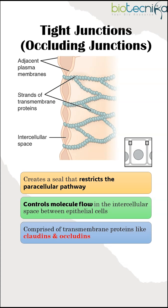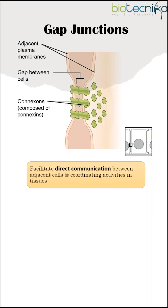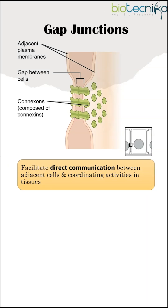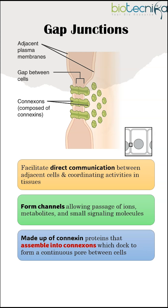Tight Junctions are comprised of transmembrane proteins like claudins and occludins. Gap Junctions facilitate direct communication between adjacent cells, forming channels that allow passage of ions, metabolites, and other small molecules.